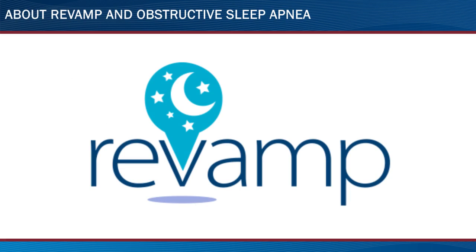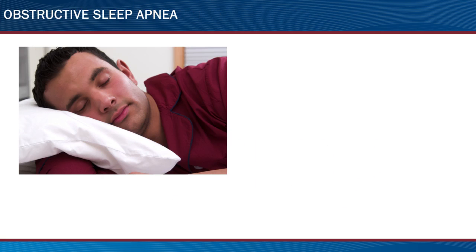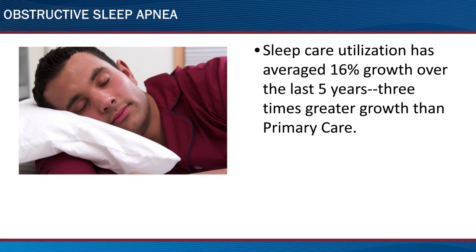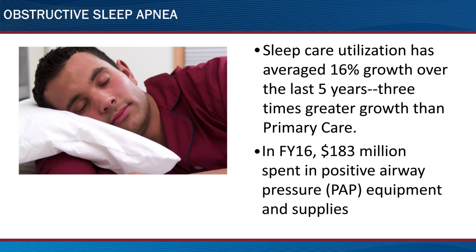Before we get into REVAMP, let's talk about obstructive sleep apnea, or OSA. OSA is the third most common chronic disease in veterans and is associated with an increased risk of hypertension, heart attacks, strokes, depression, and driving accidents. Sleep care utilization across the VA is averaging 16% growth per year — three times more than primary care. $183 million was spent on positive airway pressure, or PAP, equipment for treatment of OSA in fiscal year 2016.